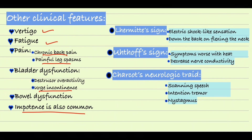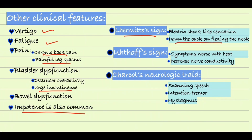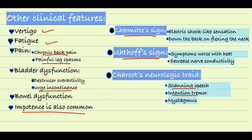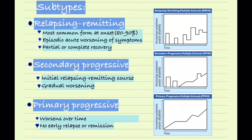There are some classical signs: Lhermitte's sign, in which the patient feels an electrical shock sensation down the back when flexing the neck. There is also Uhthoff's sign, where symptoms worsen with heat. And there is a classical neurologic triad which includes scanning speech, intention tremor, and nystagmus.